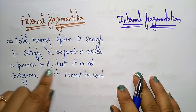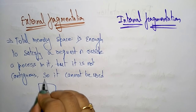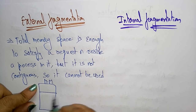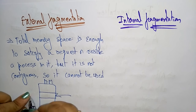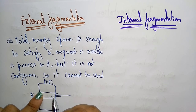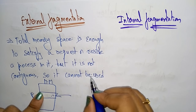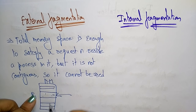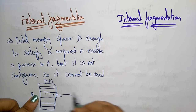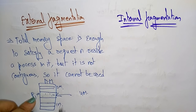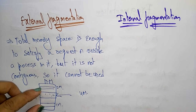External fragmentation means the total memory space is enough to satisfy a request or reside a process, but it is not contiguous. So a process P1 wants to come back to main memory — there is enough space to satisfy the request, but it is not present contiguously because it is divided into two parts. For example, 4 MB can be stored as 1 MB here, 2 MB there, and 1 MB somewhere else — it is not in a contiguous memory location.